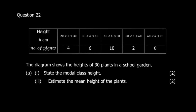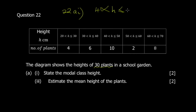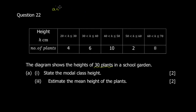Question 22: the diagram shows the height of 30 plants — 30 is the total frequency. Part A says: state the modal class. The modal class is the class with the highest frequency, which is the class with frequency 10.